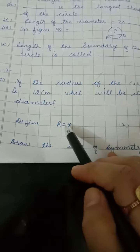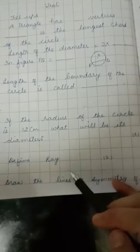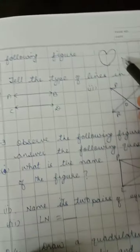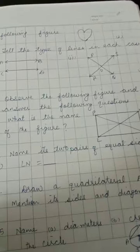Part B is define ray. Part C: Draw the lines of symmetry of the following figure. This is the figure. You have to draw the lines of symmetry for this figure.